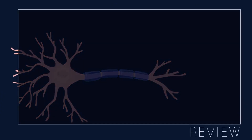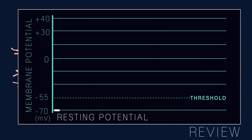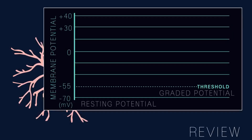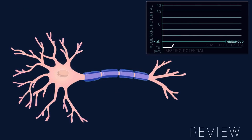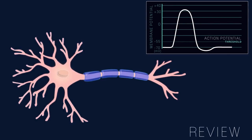To review: with no stimulus, the membrane is at its resting potential. A small stimulus causes a graded potential. And a stimulus above the threshold creates an action potential and the neuron fires.